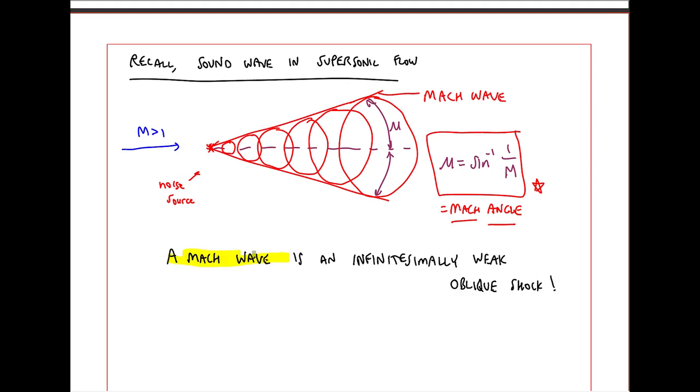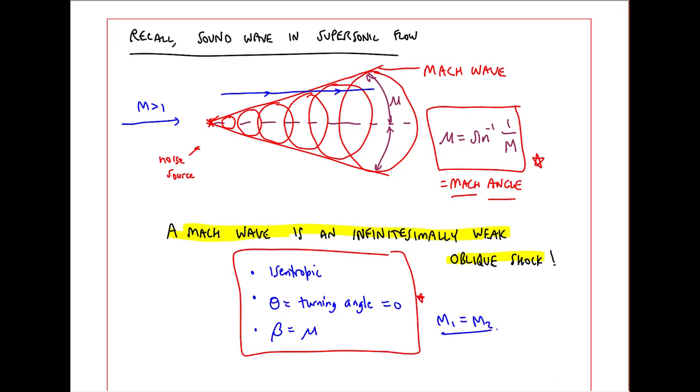The Mach wave angle is mu, which you may recall is the arc sine of 1 over M, where we call that the Mach angle. A Mach wave is actually an infinitesimally weak oblique shock. In fact, it's isentropic. The turning angle theta is zero. The flow passes straight through the Mach wave without being deflected. In fact, nothing changes across this infinitesimally weak oblique shock, since it's isentropic.